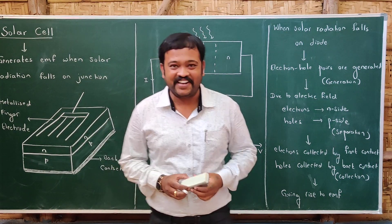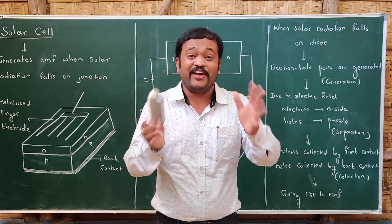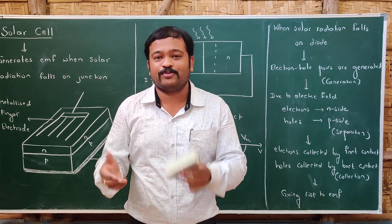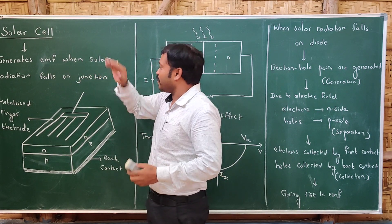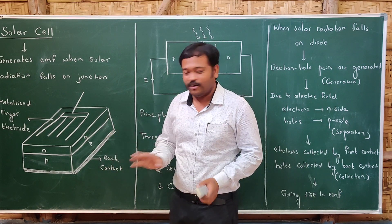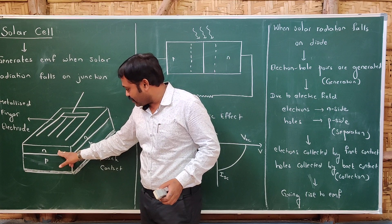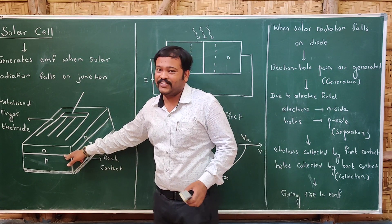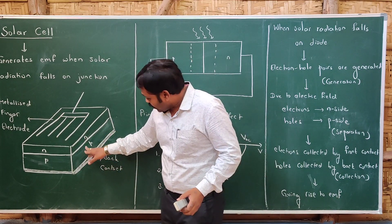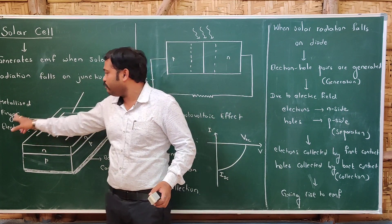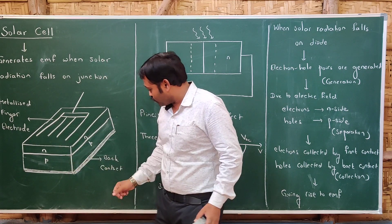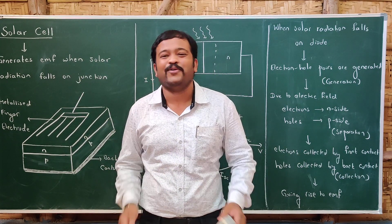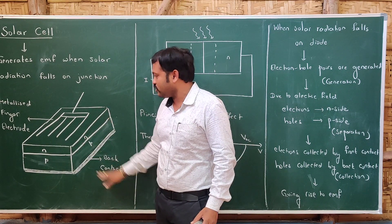The third device is the solar cell — a diode which generates EMF when solar radiation falls on it. It behaves like a cell itself. In a normal solar cell, it is a PN junction diode where the N side is thinner than the P side so that solar radiation falls directly on the junction. It has a back contact at the P side and metalized finger electrodes as the front contact at the N side. These contacts are needed so that when charges are accumulated, they can move through a conductor.